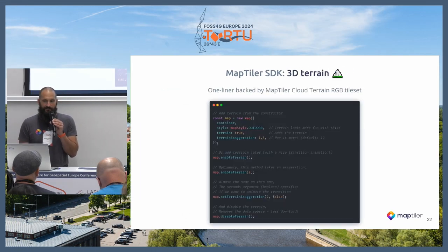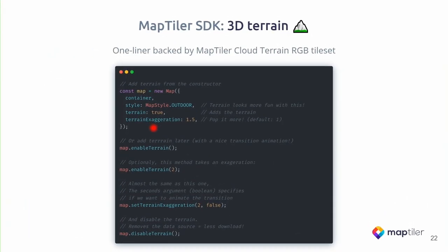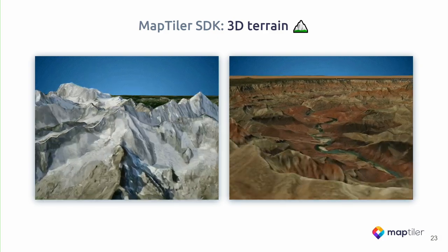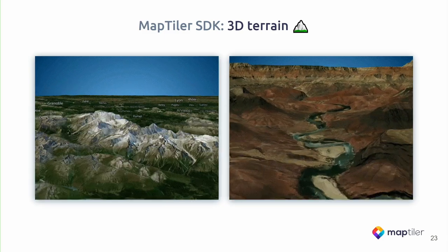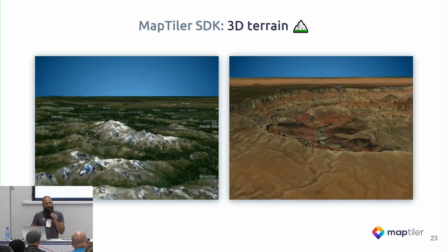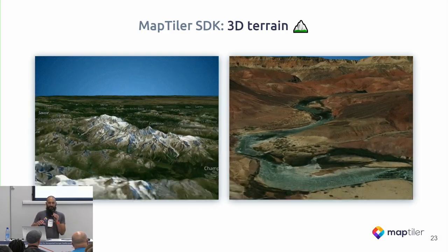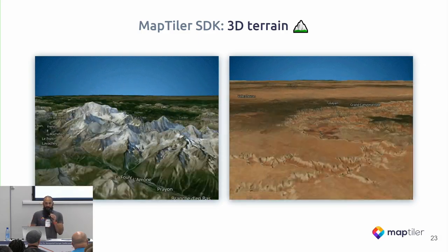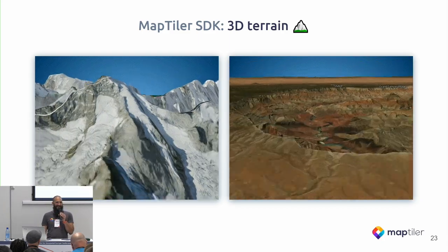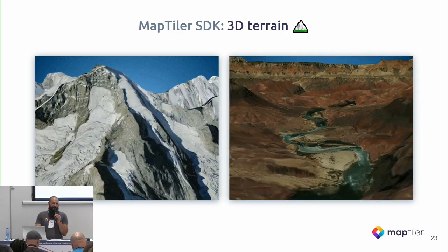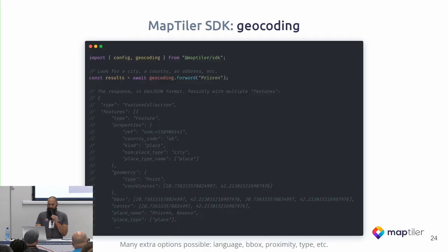The next feature is 3D terrain. With the options terrain set to true and exaggeration set to 1.5, you can enable terrain with various exaggeration levels. We have prepared a global digital elevation model, distributed in map tiles, which enables showing mountains and hilly regions directly in the web browser. It looks best for mountainous areas — don't try this on Estonia, you will see nothing. We are also adding local high-resolution terrain, so the effect should be even better.